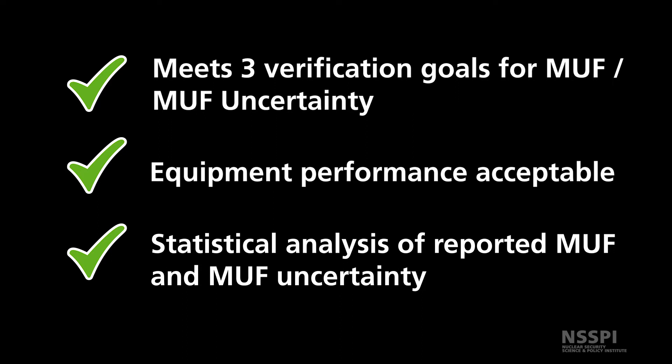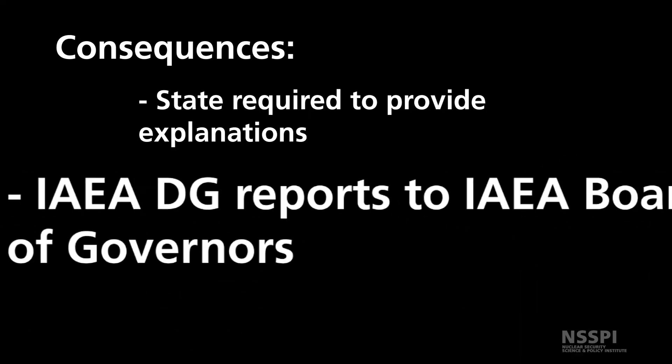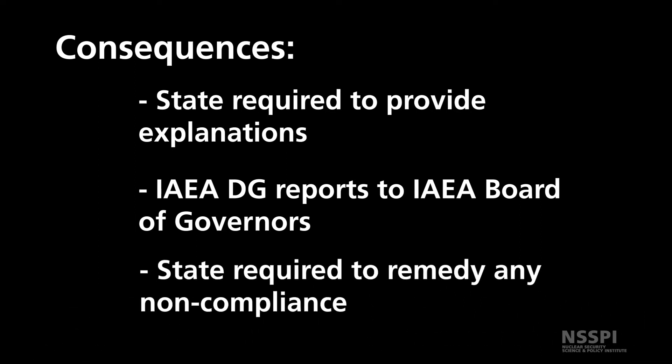If the inspector determines that any of these verifications are unsatisfactory, the state shall be required to provide explanations for the deficiencies. If the explanations are also unsatisfactory, the IAEA Director General shall report to the IAEA Board of Governors, which would call upon the state to remedy any non-compliance.